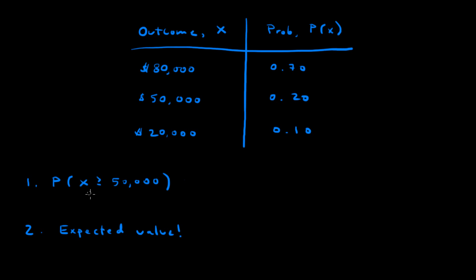Question 1 asks, what's the probability that the farmer makes more than $50,000 in a given year? That's talking about these two rows. To figure that, you just want to add the probability that X is $50,000 and the probability that X is $80,000.